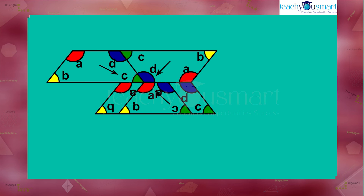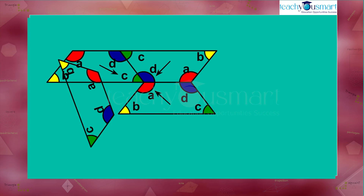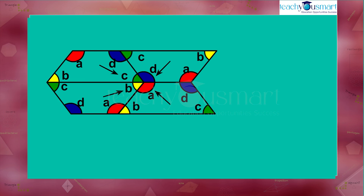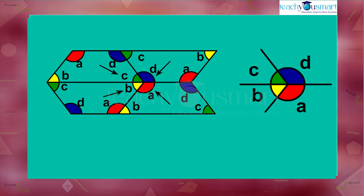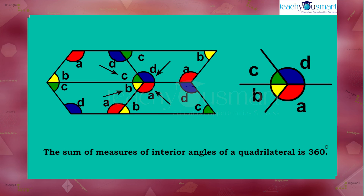Now rotate the paper again and place the angle B vertex to complete the missing part, such that angle C of the first figure and angle A of the third figure come side by side with angle B. From this activity we find that angles A, B, C, and D come together forming a circle. Therefore, the sum of measures of interior angles of a quadrilateral is 360 degrees.